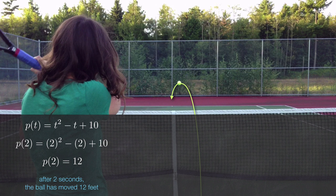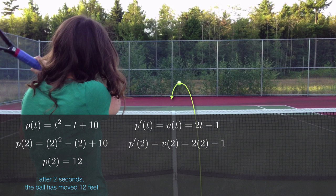If I want to find an equation that models the velocity of the tennis ball, I just take the derivative of my position function. Remember that we could call this function p′(t) or s′(t), but since it models velocity, we'll just call the derivative v(t). This function will give me velocity at any time t, so if I want to know velocity two seconds after I hit the ball, I just plug in t = 2 and I get instantaneous velocity — velocity at that particular instant, two seconds after I hit the ball.